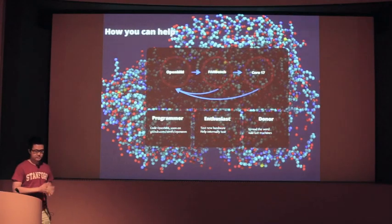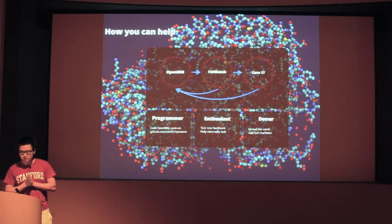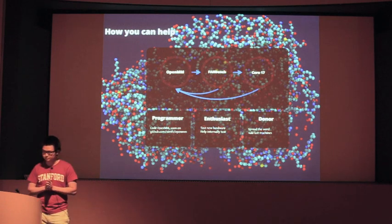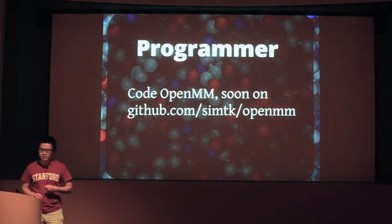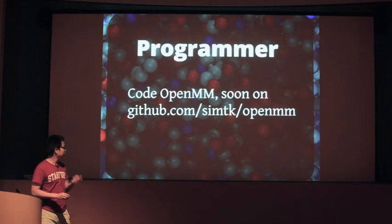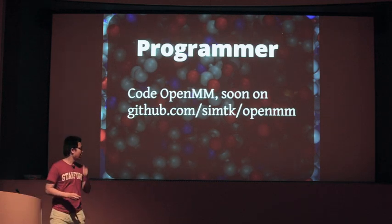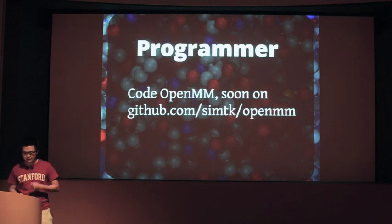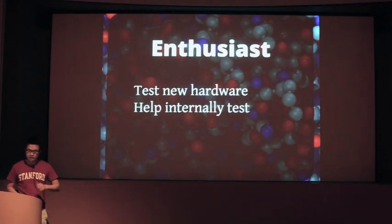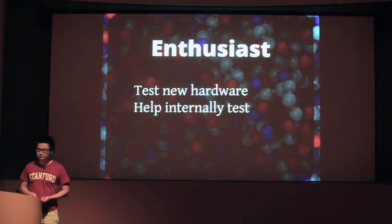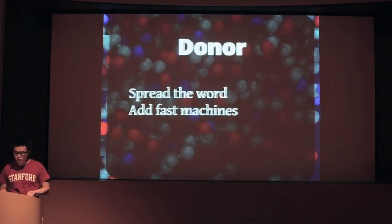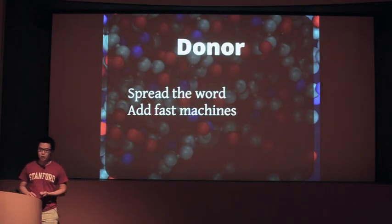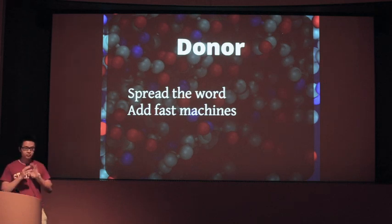Let's go back to the beginning again for a second, and here's how you guys can help us out. If you're a programmer, we invite you to contribute to the open source OpenMM project, which will be available on GitHub at the end of the month. If you're an enthusiast and you like to build state-of-the-art computers, we encourage you to run FAHBench and also join our internal testing team on Freenode. If you're a donor, we'd like you to help us spread the word about Folding@Home and bring more people — and their machines, of course.